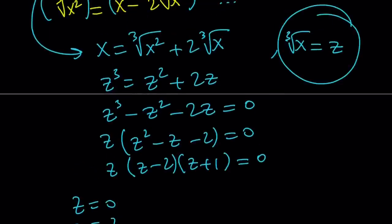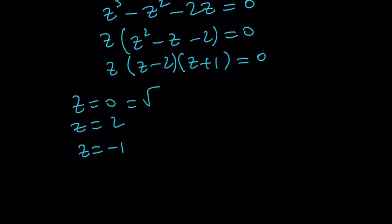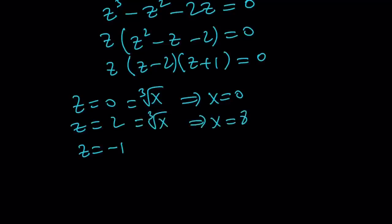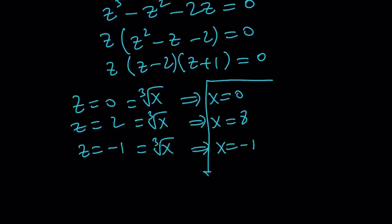But remember, z is cube root of x, so let's set each one equal to cube root of x. From z equals 0, we get x equals 0. From z equals 2, we get x equals 8, because cube root of 8 equals 2. And from z equals negative 1, we get x equals negative 1. You could also cube both sides to find x. So those are the three values. Are they all valid? You can definitely test it out, but let's do it later.